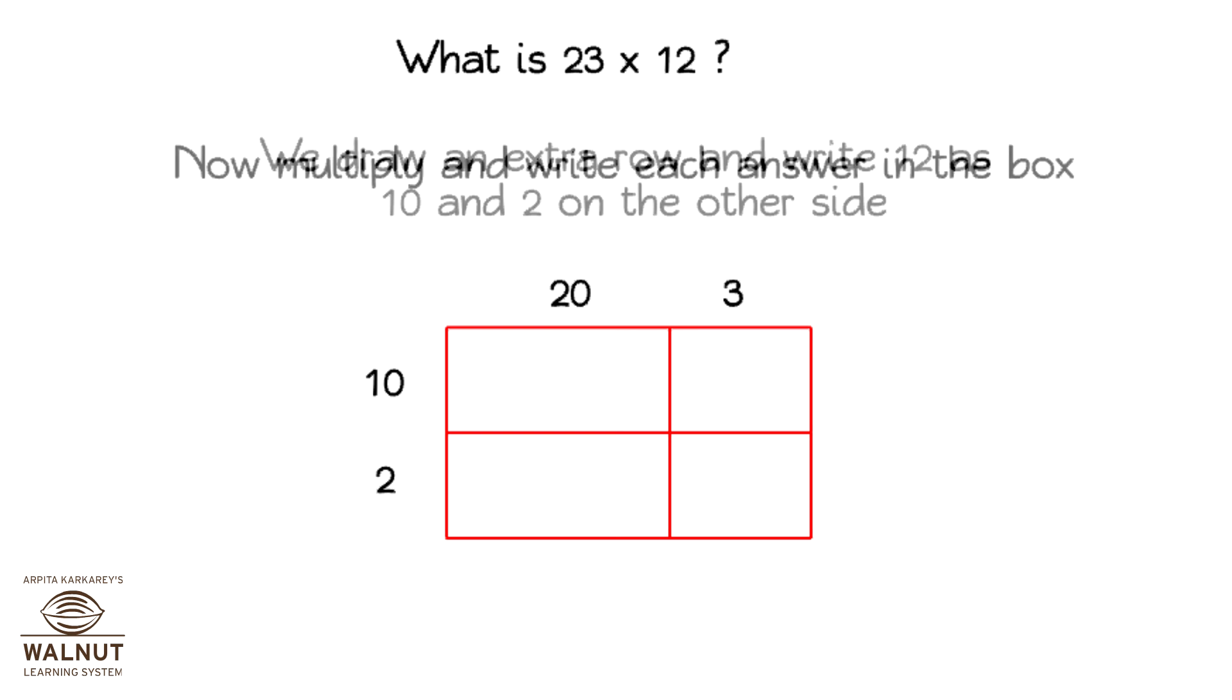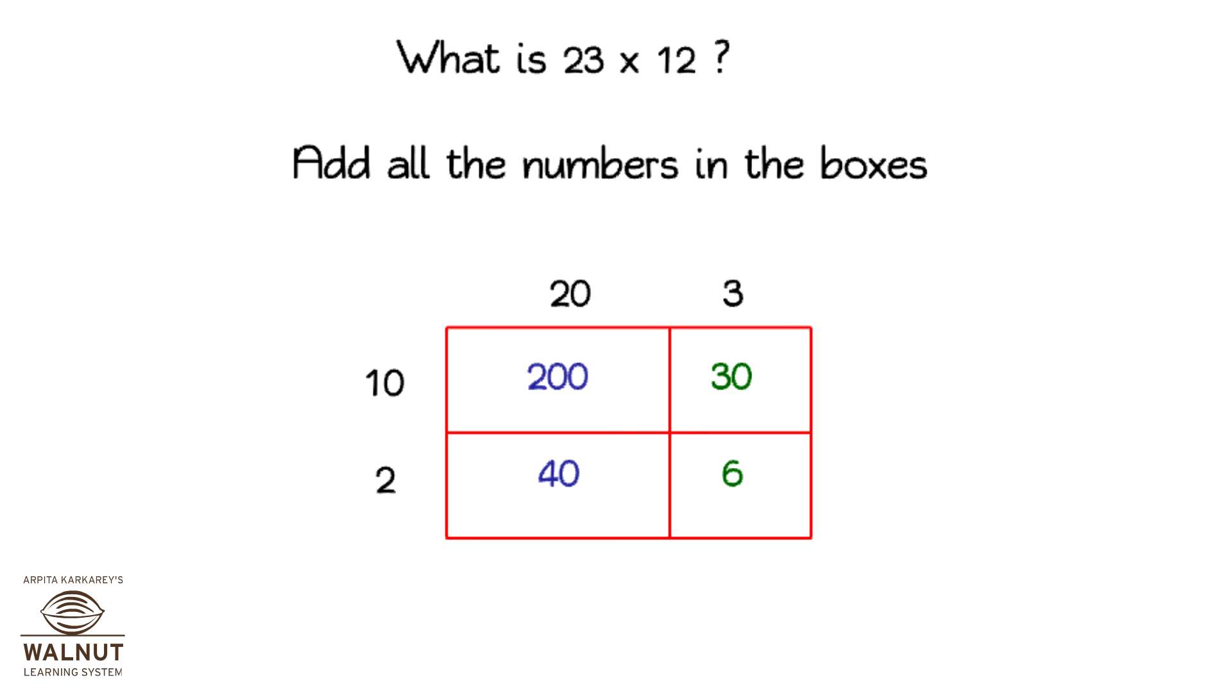Now, multiply and write each answer in the box. Add all the numbers in the boxes. 200 plus 30 plus 40 plus 6 is equal to 276. That is our final answer.